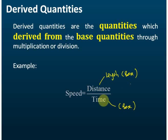Now, both distance and time are base quantities. And speed, speed is equal to distance over time. So we say speed is derived from distance and time. And for the quantity which derive from base quantities, we call this a derived quantity.